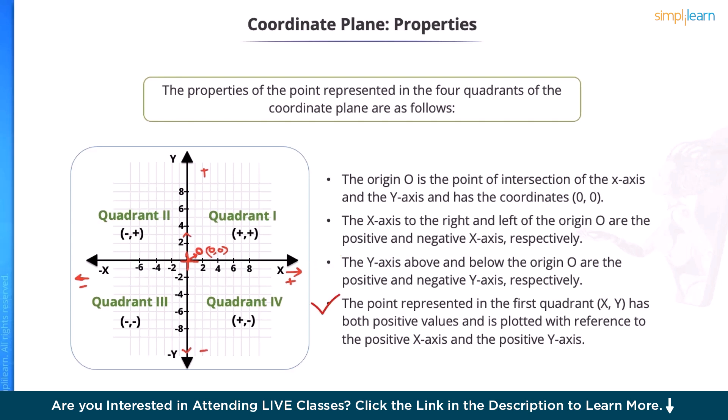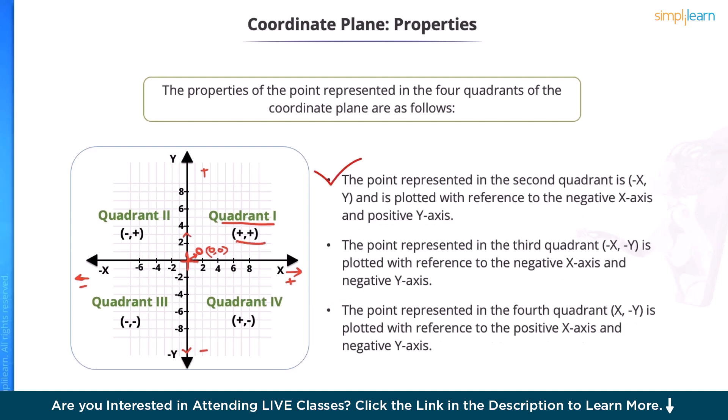The point represented in the first quadrant has both x and y as positive values. While the point represented in the second quadrant is a negative x and a positive y value and is plotted with reference to a negative x and a positive y-axis.